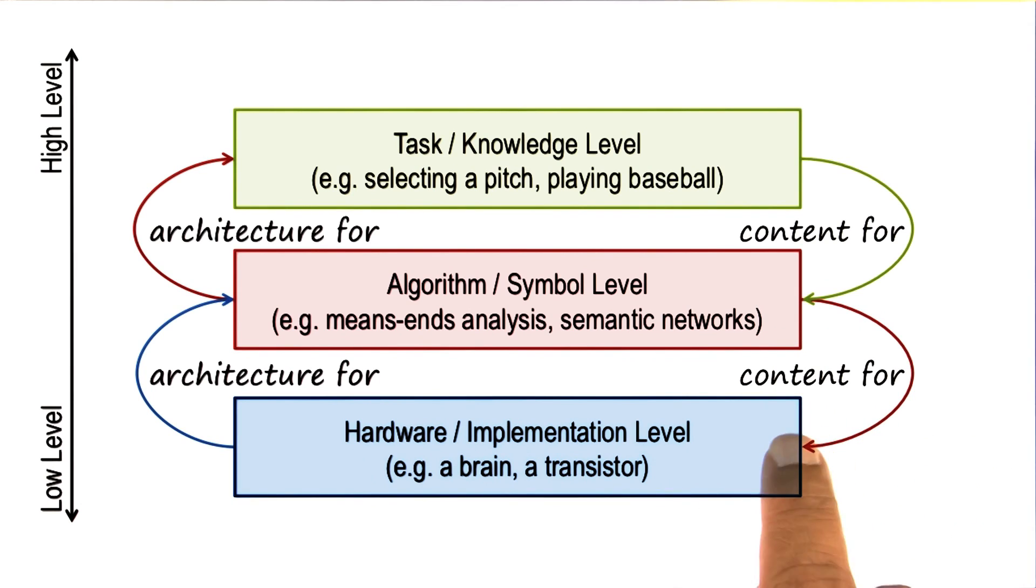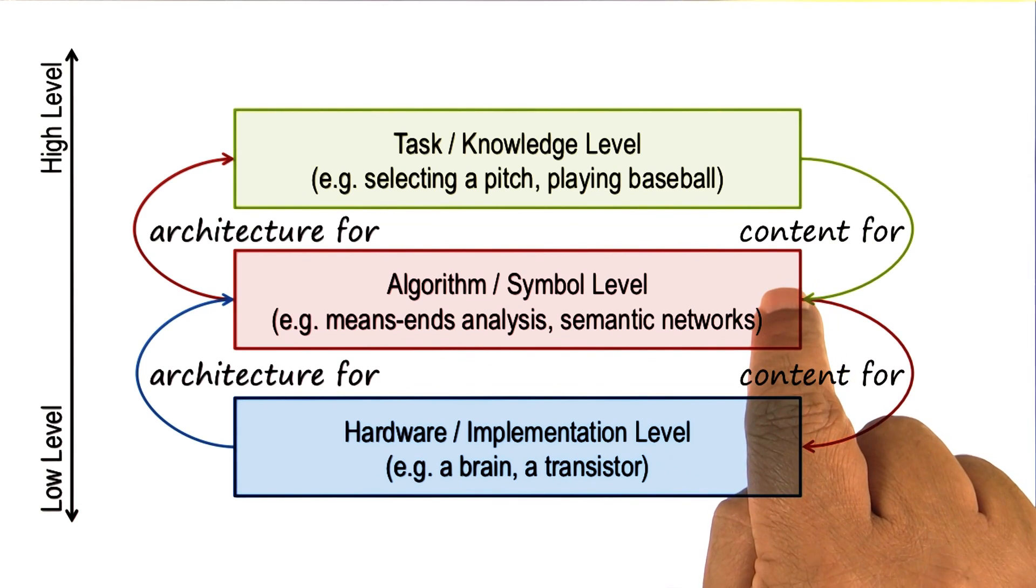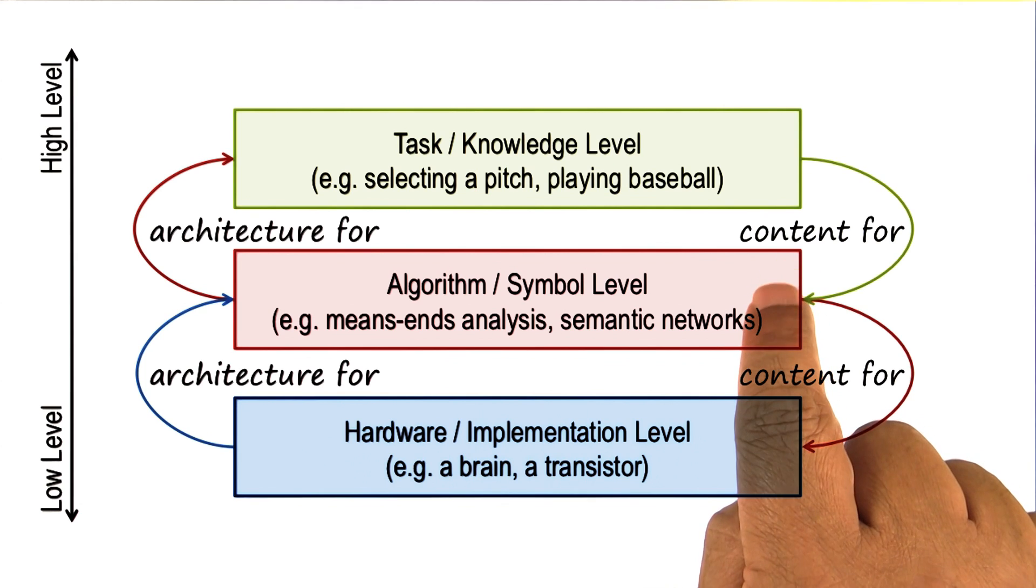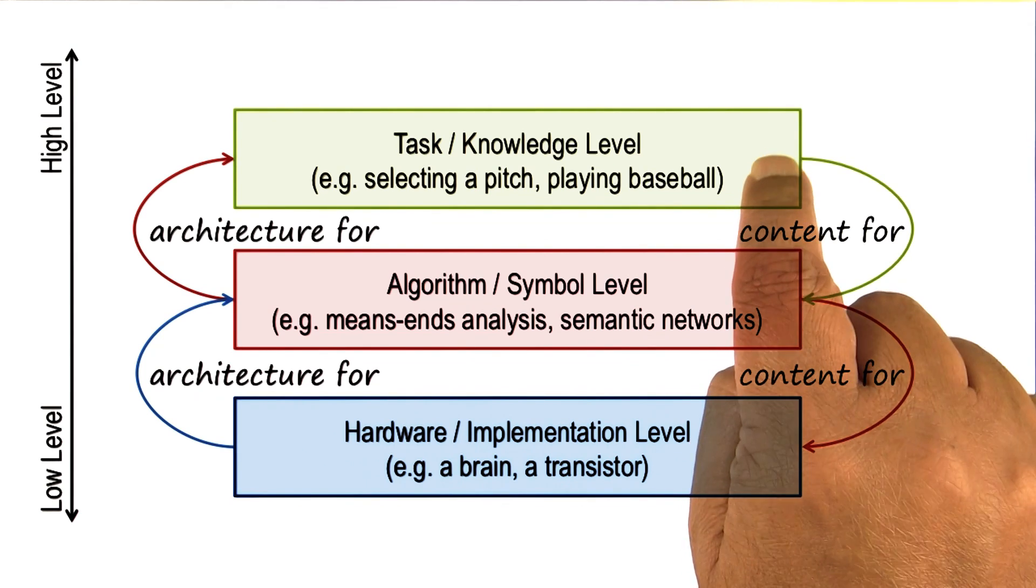In the other direction, if we know what kind of hardware we have, that imposes constraints and provides affordances for what kind of algorithms and knowledge representations can be there, which then provides affordances and constraints for what kind of tasks can be done and what kind of knowledge can be used.